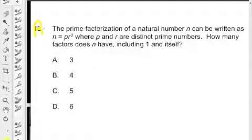So it reads this way: the prime factorization of a natural number n can be written as n equals p times r squared where p and r are distinct prime numbers. How many factors does n have including one and itself?